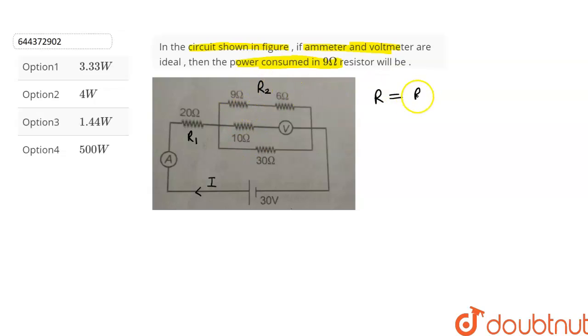So R will be equal to R1 plus R2, because the equivalent resistance R2 will be connected in series with R1. Let's calculate R2.